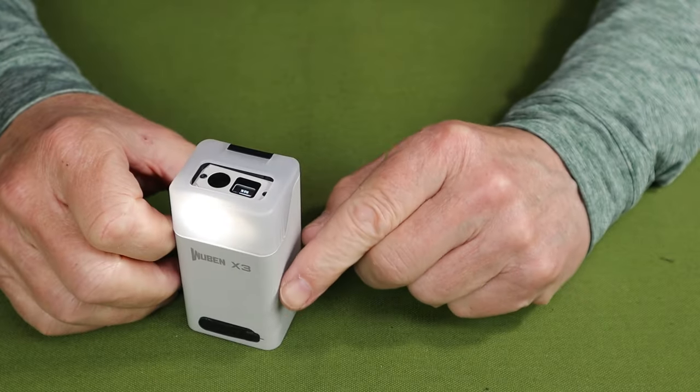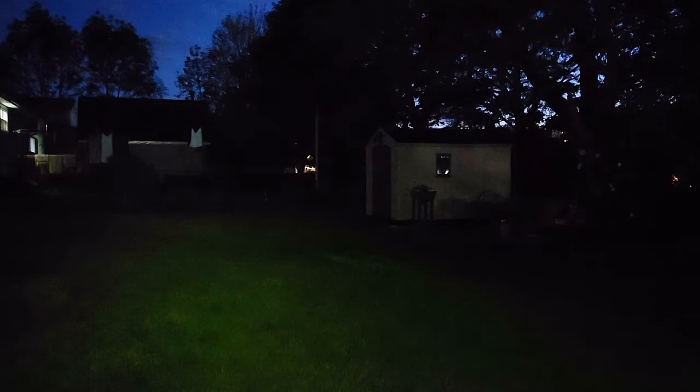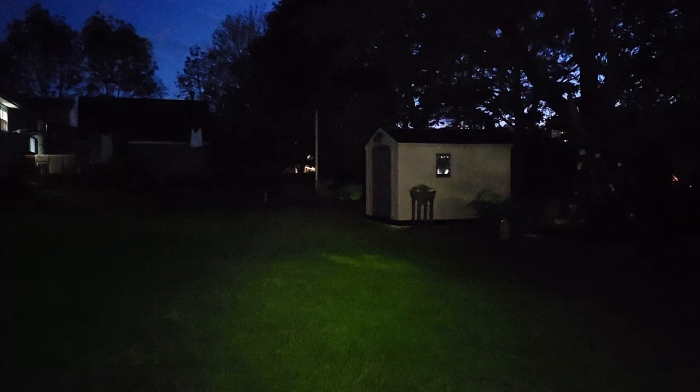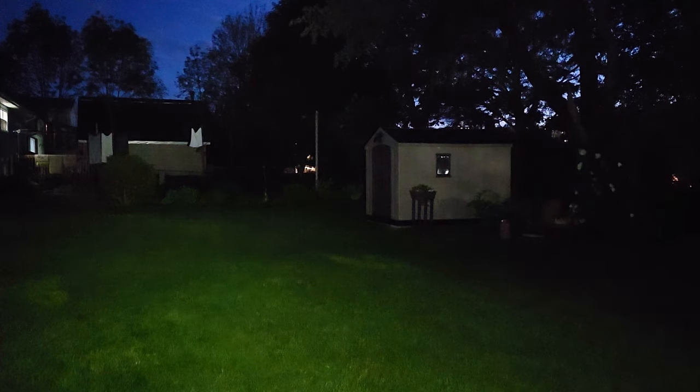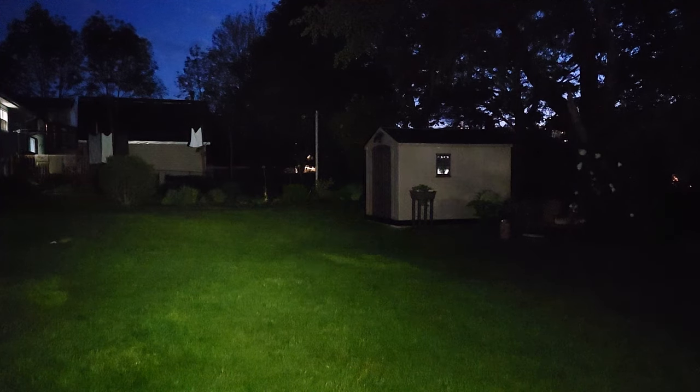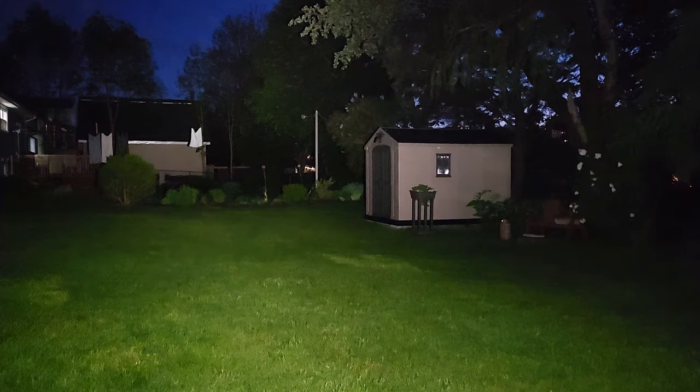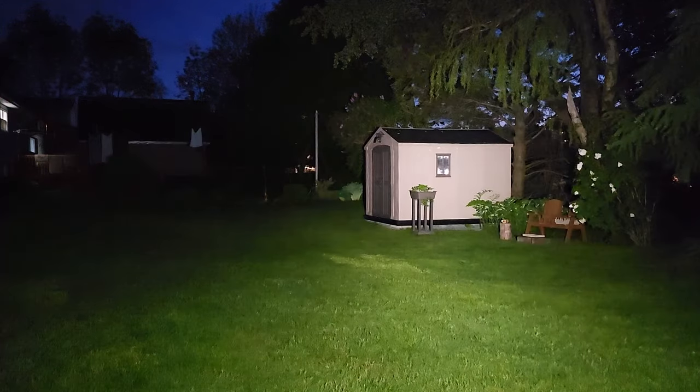Let's start the Wubin X3 off on medium, which is 50 lumens. And there's a bit of light all around my feet. Since it's all flood, it's not lighting up a whole great lot of area. Take it up to what would be high at 150 lumens. That's starting to light the backyard up, but let's try turbo. Now that is a lot of light, 700 lumens. Lighting up my backyard with a lot of flood light. Very impressive for a small light.